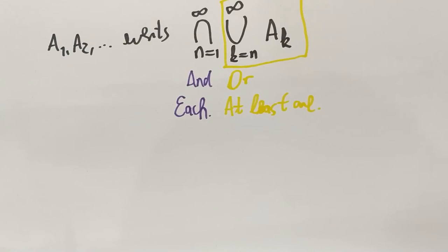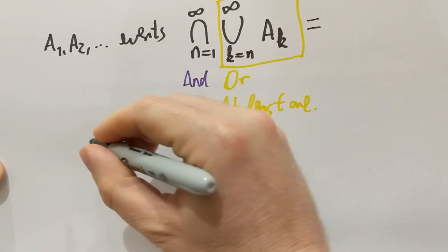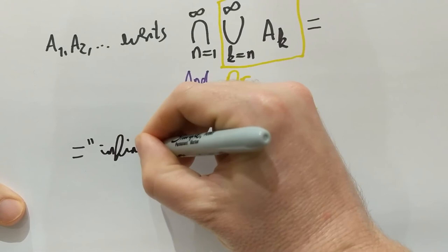So in total, what we have is that this event here, the intersection of the union, is simply saying that after every n, I have another of these AKs happening. In short, it's equivalent to saying that there are infinitely many of the AKs occur.